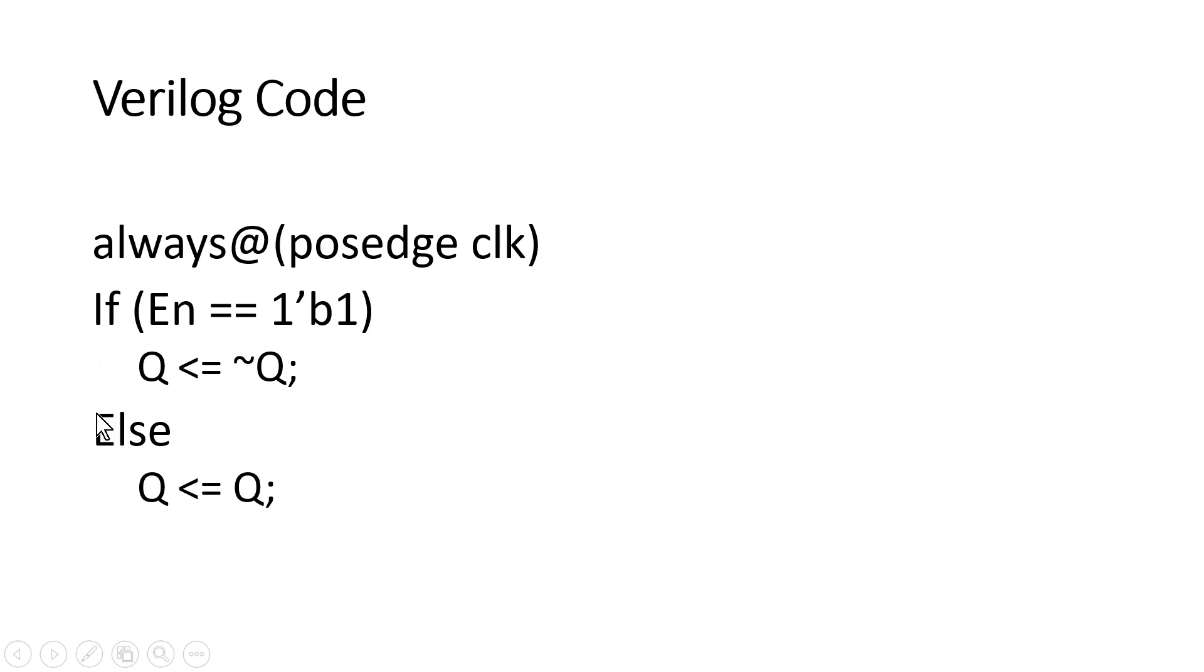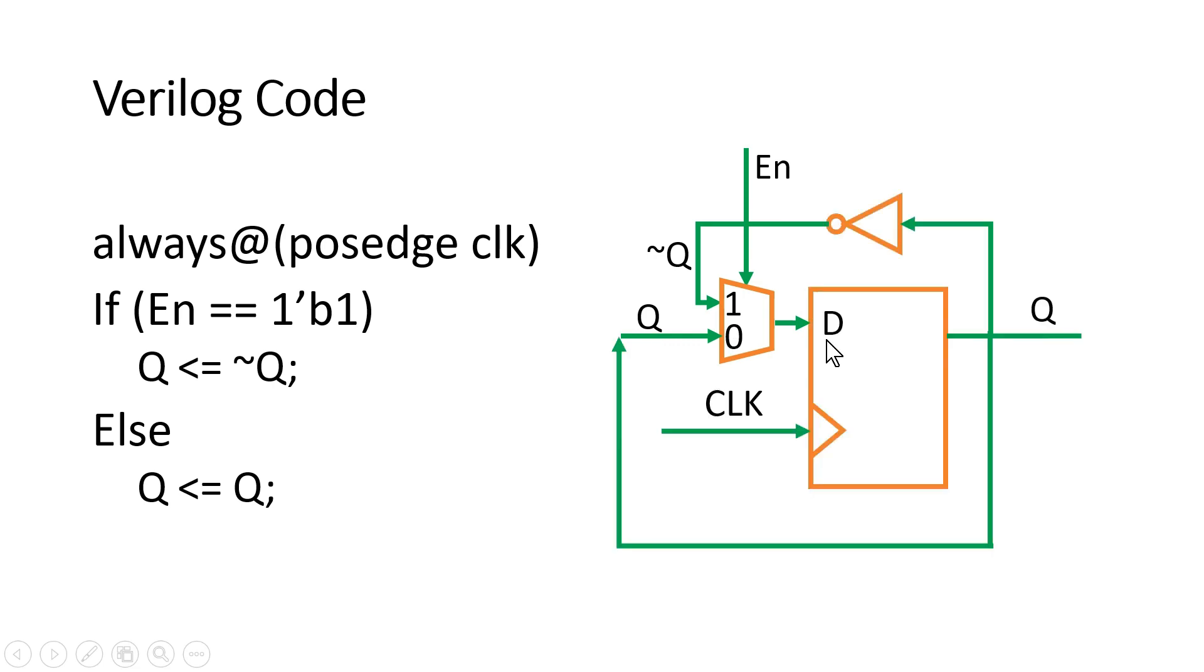So we need to design this combination logic block. Let me show you how. So you have to take one 2 to 1 multiplexer. And on the select line we need to apply enable signal. So when enable is high, we are going to pass Q bar. Else we need to pass Q only. And Q is the output of a D flip flop. So you see Q is the output of this D flip flop. And this will be the final logic circuit diagram with the help of multiplexers.